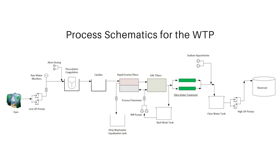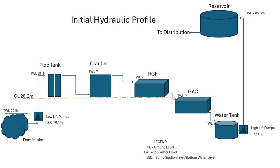With time the filters will become clogged because they collect all that dirt, so there is a need to clean them using a process called backwash. We pump water in the reverse direction — when a filter is working, water is introduced at the top, filters through the sand, and is collected at the bottom via nozzles or an under-drain. During backwash, water rises up through the nozzles or under-drain carrying all the dirt out. Backwash can also be done simultaneously using an air blower.